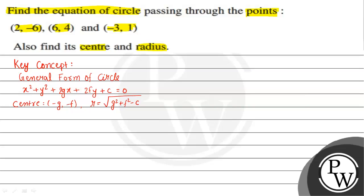In this equation, x and y are known but g, f, and c are unknown. The given points, when they lie on the circle, will satisfy the equation. So we have 3 equations formed from 3 points with 3 unknowns: g, f, and c.